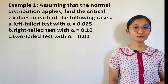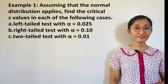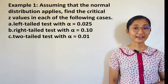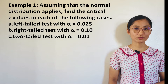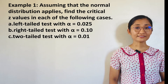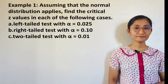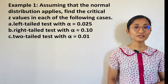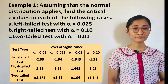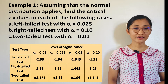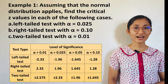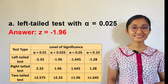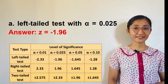Example 1: Assuming that the normal distribution applies, find the critical Z-values in each of the following cases. Case A: Left-tailed test with alpha equals 0.025. Using the table of critical values, the answer is Z equals negative 1.96.